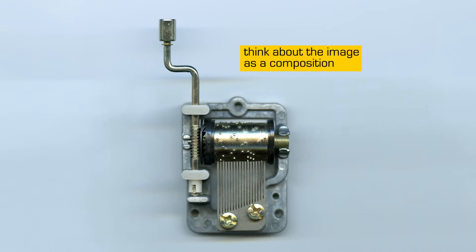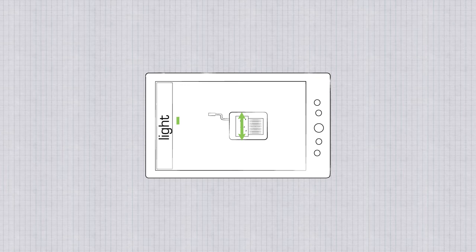So, I started thinking about what difference it would make if we changed the orientation of the device on the scanner. Now, remember, the light and sensor travel only in one direction. We have no control over that. So, in this first image, the barrel of the music box is parallel to the light source.